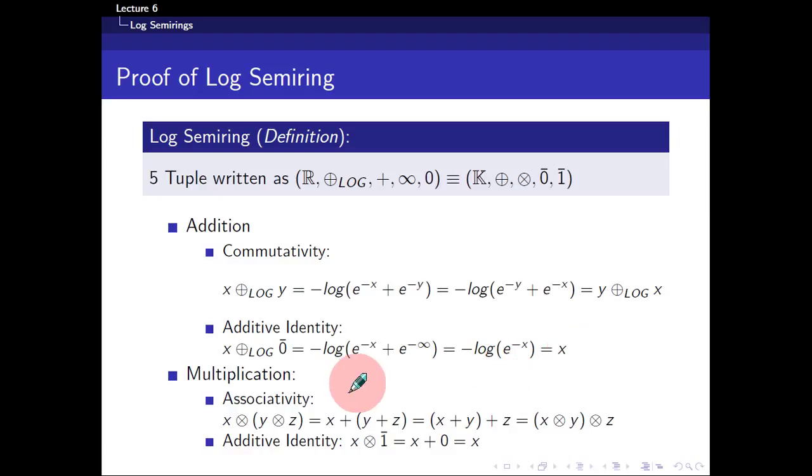So the remaining things to show is the properties for the multiplication operator, namely the associativity of the multiplication operator. So again, it's easy to show these two things because I've done it for the previous lecture.